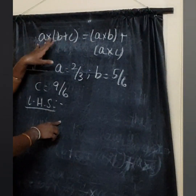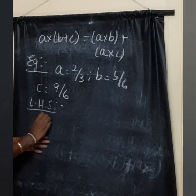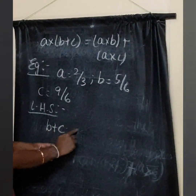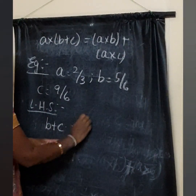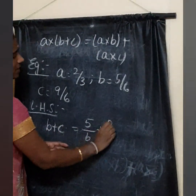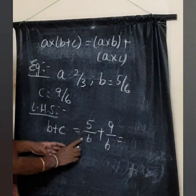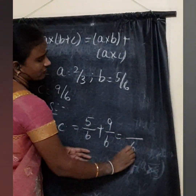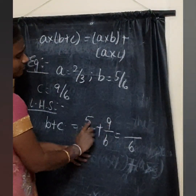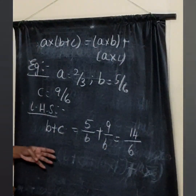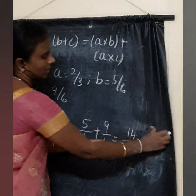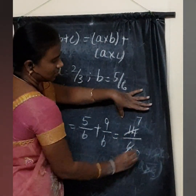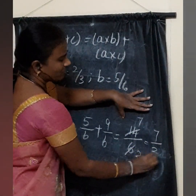First find B plus C: 5 by 6 plus 9 by 6. The denominators are the same, so we get 14 by 6. We can simplify: 7 twos are 14 and 3 twos are 6, giving 7 by 3.